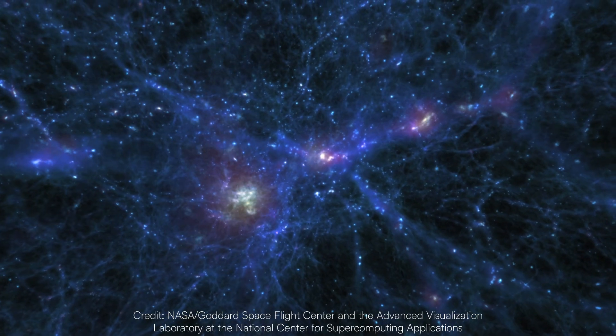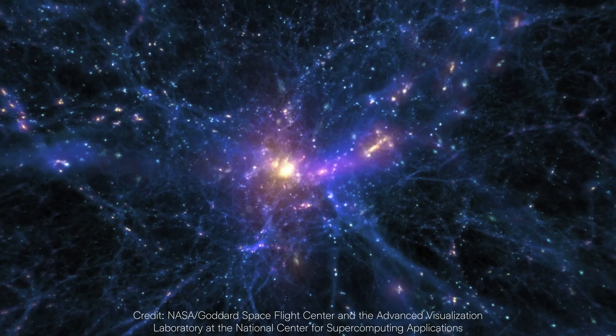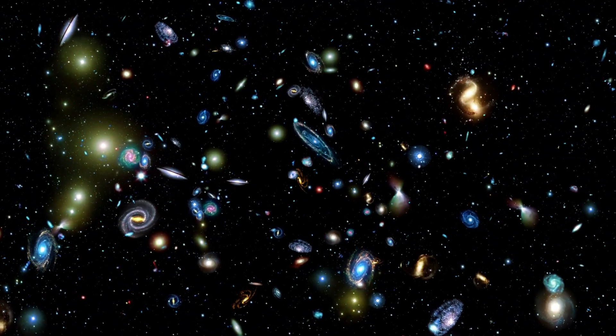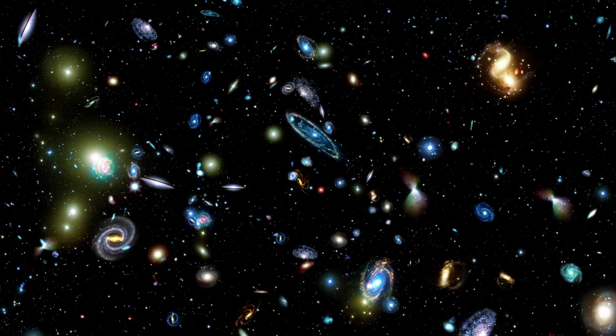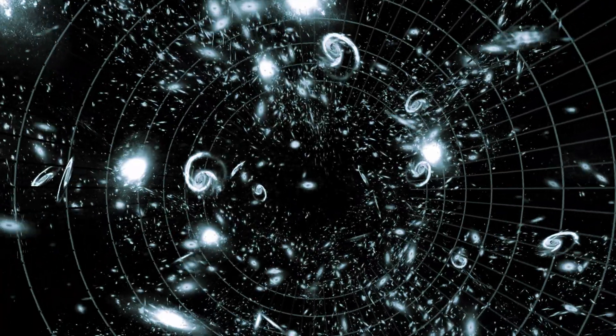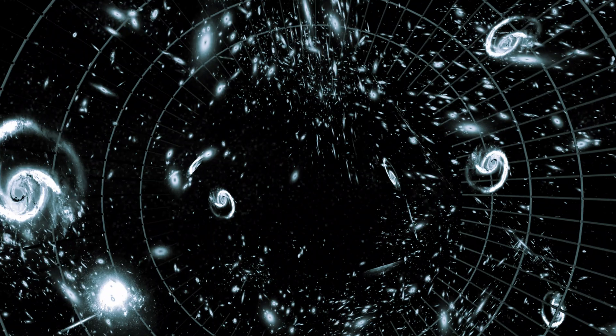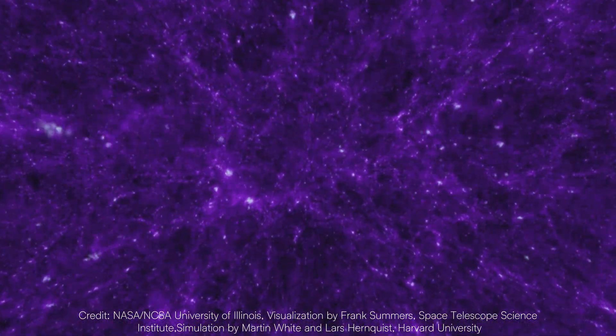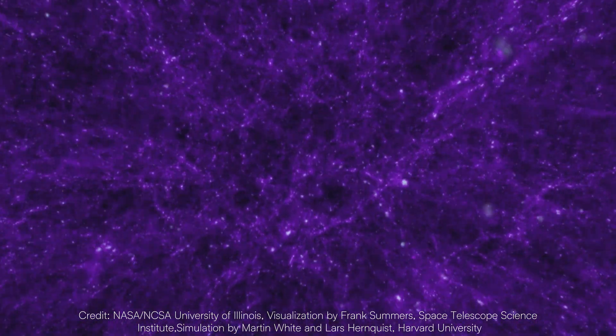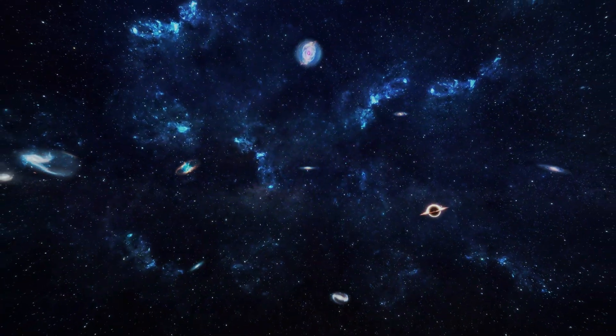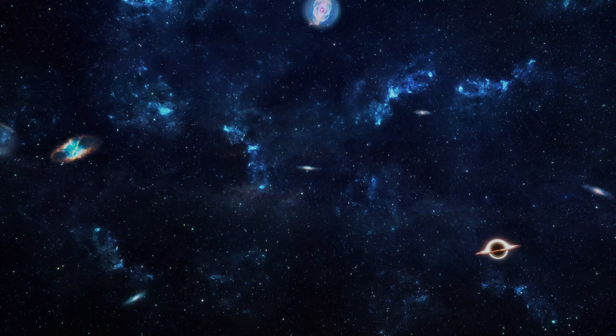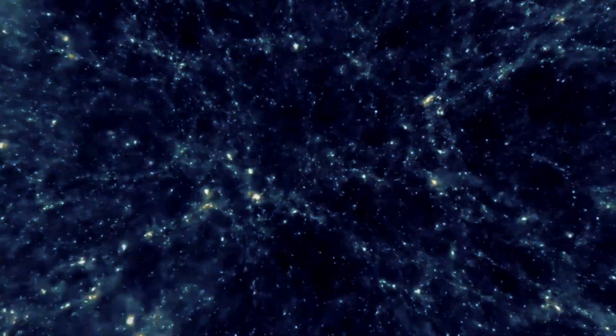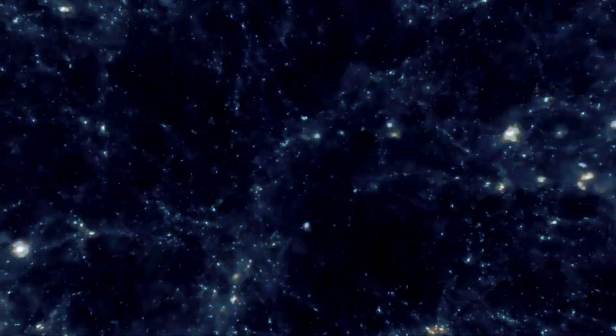Initially, astronomers assumed that gravity from matter in the universe would slow down this expansion over time, as galaxies exert significant gravitational pull on one another. However, in the late 1990s, observations of distant supernovae revealed that galaxies are moving away from each other at an accelerating rate. This accelerating expansion was unexpected and counterintuitive. Rather than the universe slowing down due to gravity, it seemed something was pushing galaxies apart faster and faster.